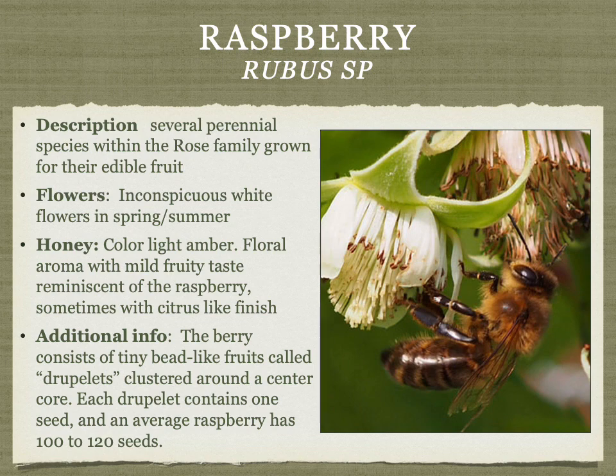The berry is actually a cluster of little fruits called druplets — each druplet has one seed, and every raspberry is a collection of 100 to 120 of these.